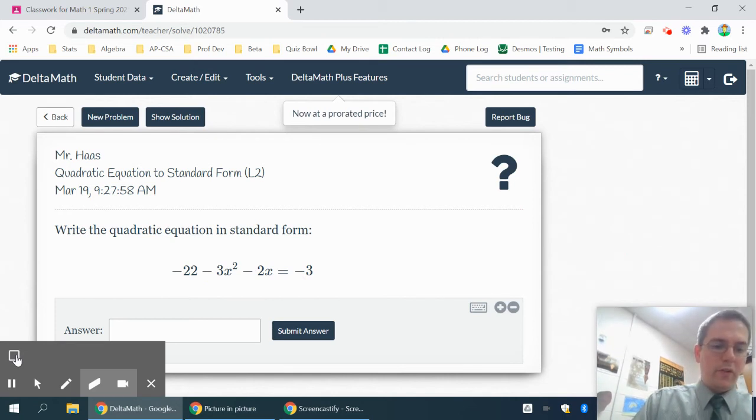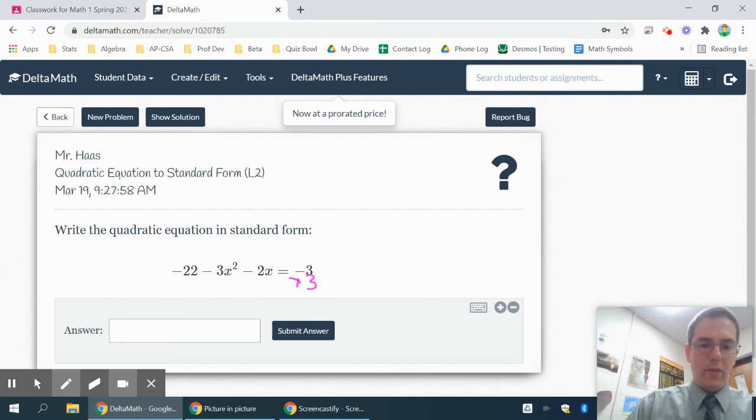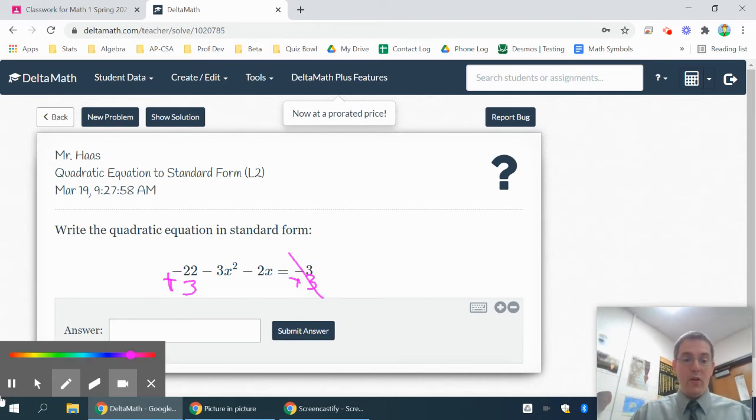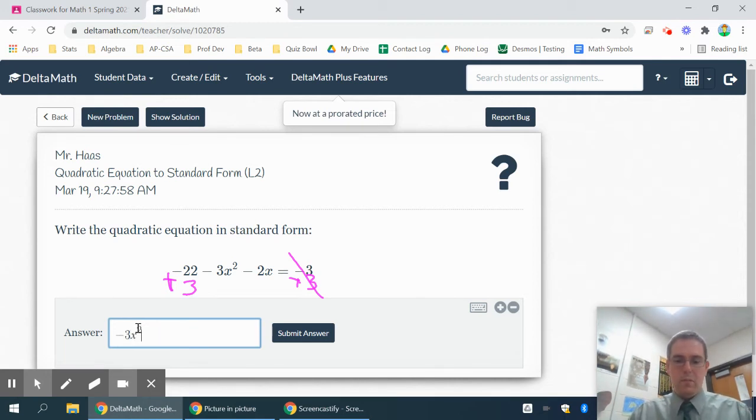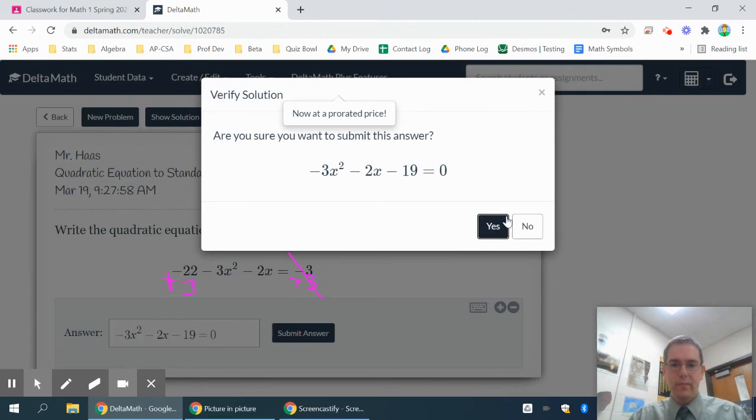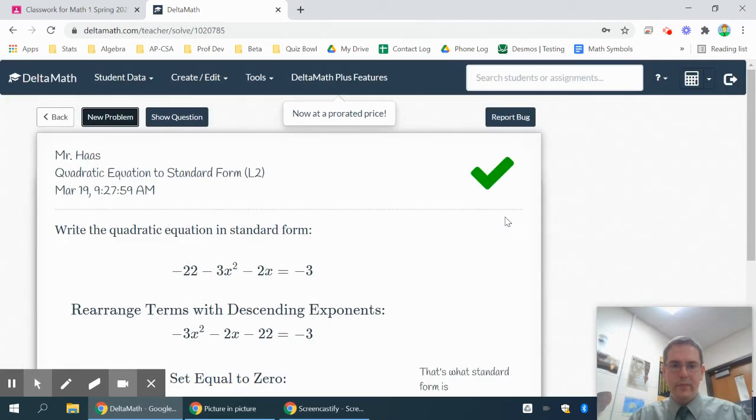Some of them are shorter than others, like on this one. The only thing you have on the right side is the minus 3, so you're going to add 3 to both sides. And since there is a plain number, I'm going to line it up under the plain number. So at this point, I just write it in standard form by putting everything in order. Negative 3x squared minus 2x, and then minus 19, and don't forget you're equal 0.